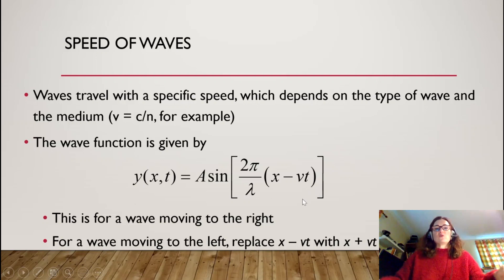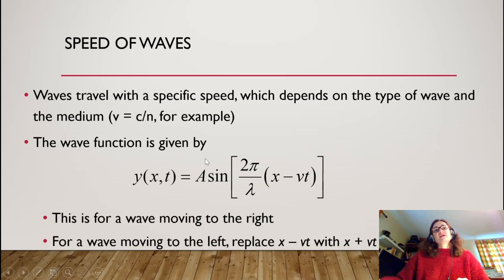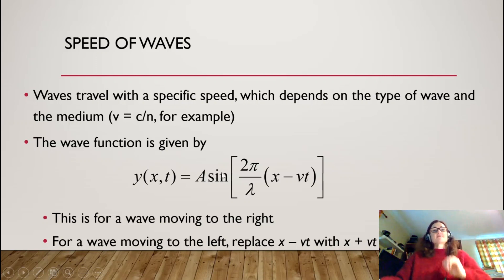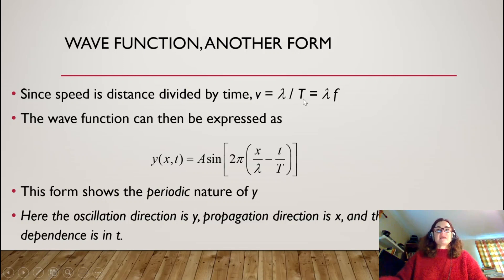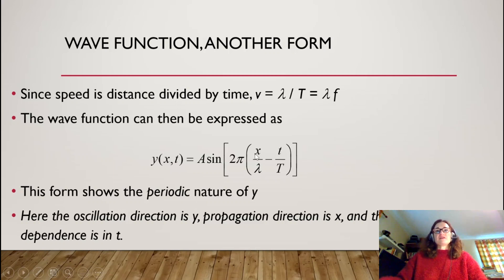This describes a wave moving in one dimension and oscillating in another. The speed of a wave v equals the wavelength divided by the period: v = λ/T. Since frequency equals one over the period, v can also be written as λf — wavelength times frequency. This is true for all waves obeying this function. We can also distribute the 1/λ into the argument to write the wave function as y = A sin(2π(x/λ − t/T)), which shows the periodic nature of y as a sinusoidal function.